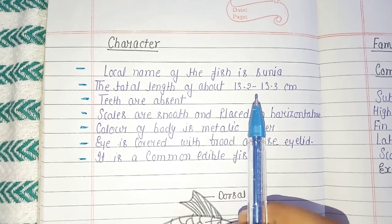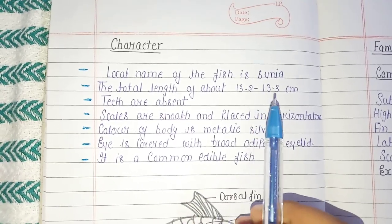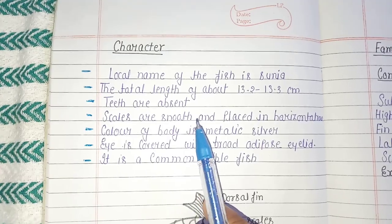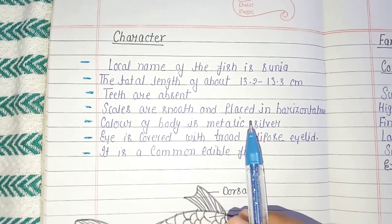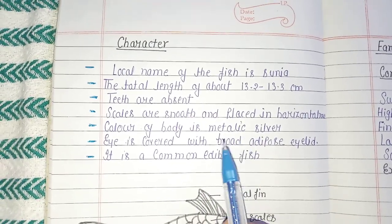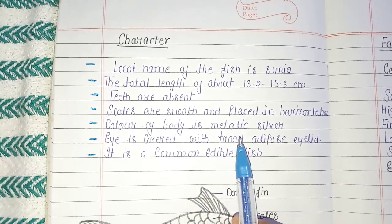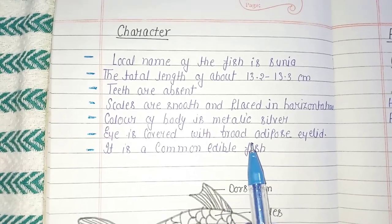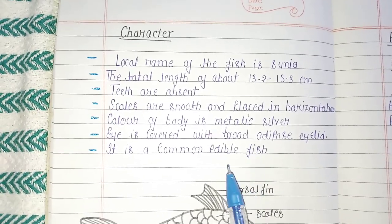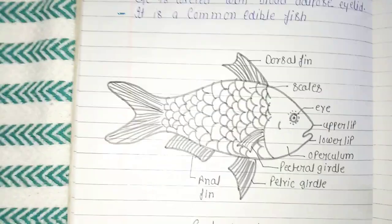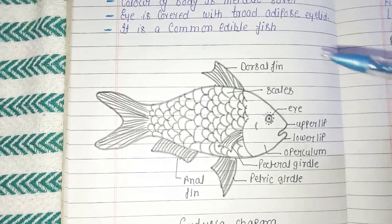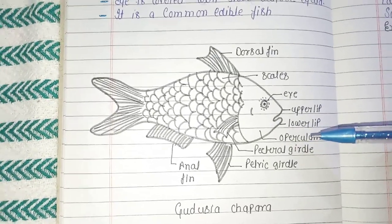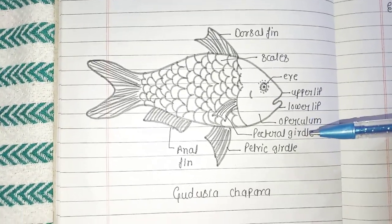Characters of Gudusia chapra: the local name of the species is Sunia. The total length is approximately 13.2 to 30.3 centimeters. Teeth are absent. Scales are smooth and arranged in horizontal rows. Color of the body is metallic silver. The eye is covered with a broad adipose eyelid. It is a common edible fish.